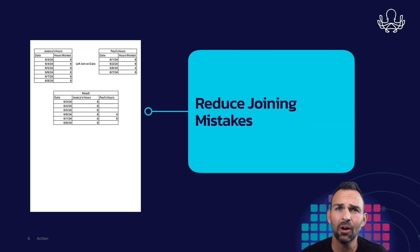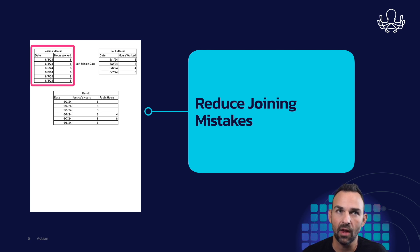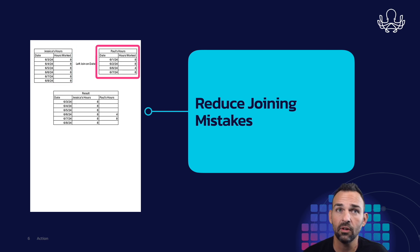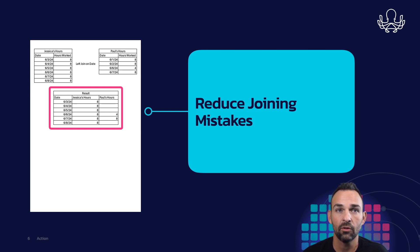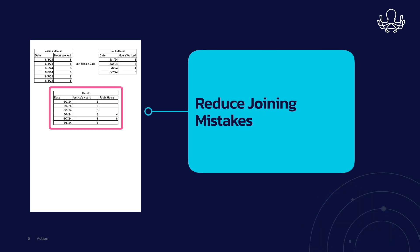Finally, scaffolding helps reduce joining mistakes. On the left table we see Jessica's hours, her dates and hours worked, and on the right we see Paul's dates and hours worked. If we were to join those tables based on date, we would see that only Jessica's dates remain, and it'll only show two dates for Paul, not painting the full picture of the story.